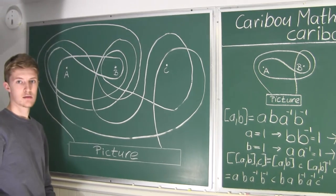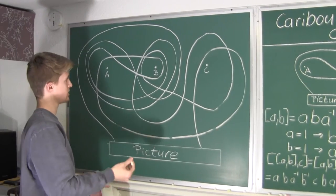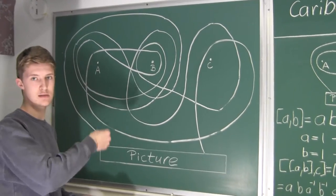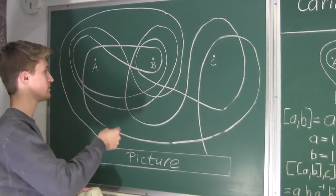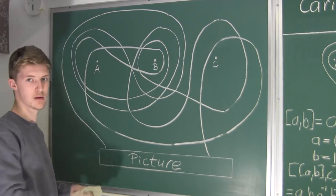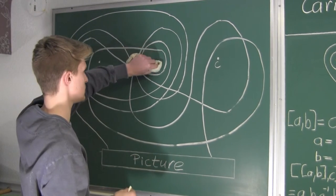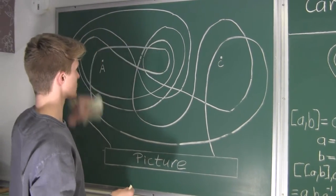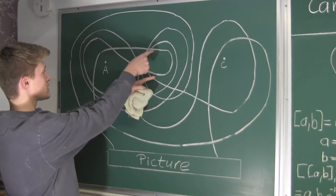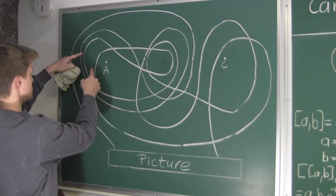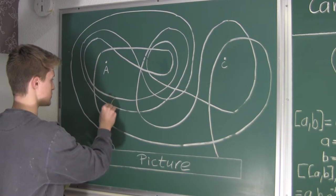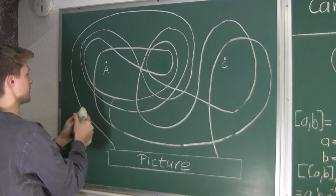Now let's pick a random nail to verify this works. Let's pull nail B, since it is right in the middle. We have this loop here which continues along, so we can simplify it. We can just draw it like this.